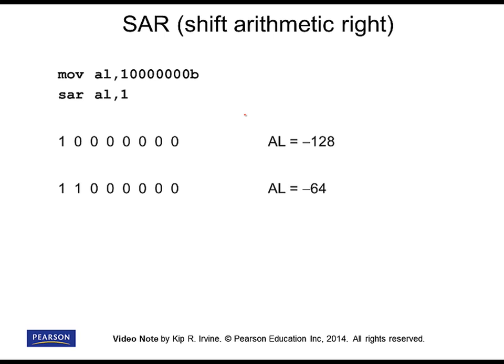Now let's talk about a variant of the shift right called shift arithmetic right. This is used in cases where the number is determined to be a signed integer, and the goal is to preserve the sign. The shift takes into account whatever the highest bit was and uses it to fill the highest bit position of the result — that same bit value is replicated and inserted into the high bit. The reason for doing this is to preserve the number's sign: if the high bit was one, the number was negative, and we have to be sure it preserves its sign when we shift to the right.